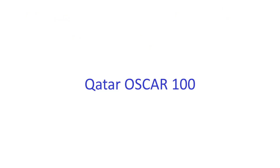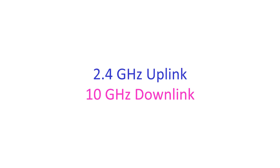Qatar Oscar 100 was the first geostationary amateur radio transponder which became operational in 2018. It is a joint project between the Qatar Satellite Company, the Qatar Amateur Radio Society, and AMSAT Deutschland, which provided the technical lead. Qatar Oscar 100 is hosted on ES'HAIL-2, a broadcast transponder satellite owned by the ESAILSAT Qatar Satellite Company. It is now in a geostationary orbit at 25.9 degrees east, and covers a wide area from Brazil to Thailand. Uplink is in the 2400 MHz and downlink in the 10450 MHz band. A 250 kHz bandwidth linear transponder is intended for conventional analog operations, while an 8 MHz bandwidth transponder is for experimental digital modulations and DVB amateur television.